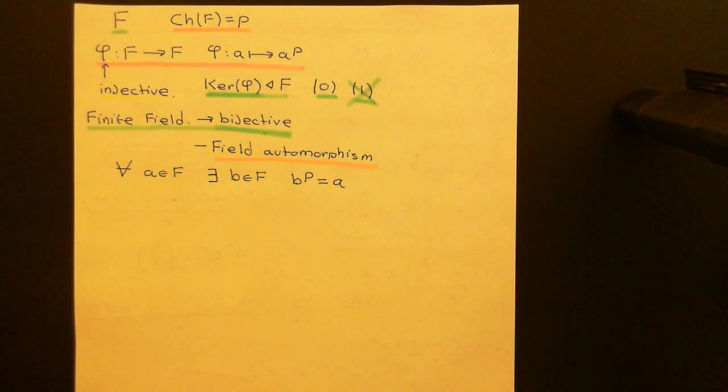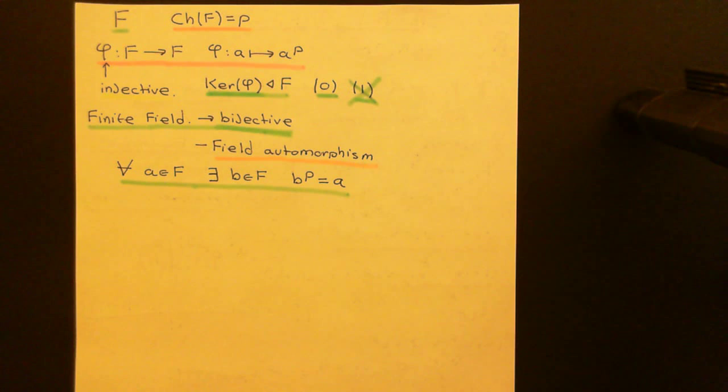It's important to be aware that if you're working with a finite field of characteristic P, then for any element in that field you can find another element which, if you raise it to the power of P, gives you your initial element. And with that final comment, we will end this video on the Frobenius endomorphism.